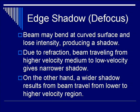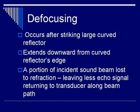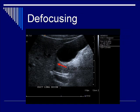The next subcategory of refractive artifact is edge shadowing, otherwise known as defocusing. As beams bend at the curved surface, they lose intensity, producing a shadow around a vessel such as the gallbladder or an organ. Due to refraction, the beam traveling from high-velocity to low-velocity mediums gives a narrow shadow; going from slower to faster gives a wider shadow. Defocusing occurs classically after striking a large curved reflector, such as a vessel or the gallbladder wall, and extends downward from the curved refractor's edge. Because a portion of the incident sound beam is lost to refraction, less echo signal returns to the transducer, explaining the dark anechoic characteristic of the shadowing phenomenon.